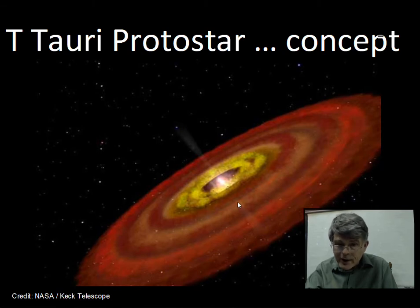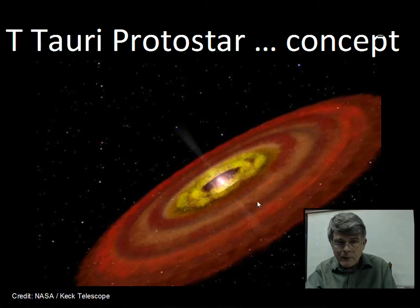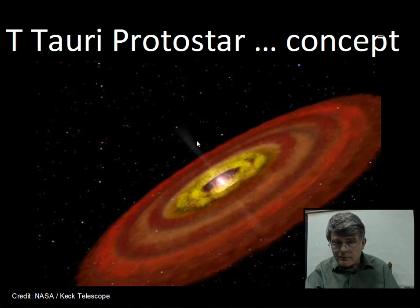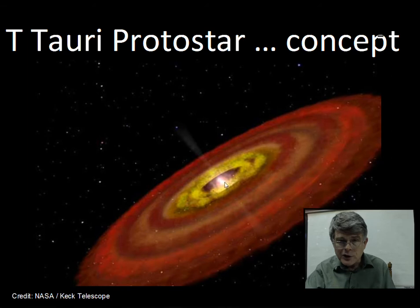The T Tauri star has a disc around it. It's very common for rotating things to form a disc shape in the universe — we have Saturn's rings, and spiral galaxies. The T Tauri star beams energy out from the poles; the gas and dust disc blocks energy from going out in the plane of the disc, but there's less obscuring material at the poles. The magnetic field of the star may also have a role in the beaming, but primarily the gas and dust disc is responsible — energy goes out from the poles.